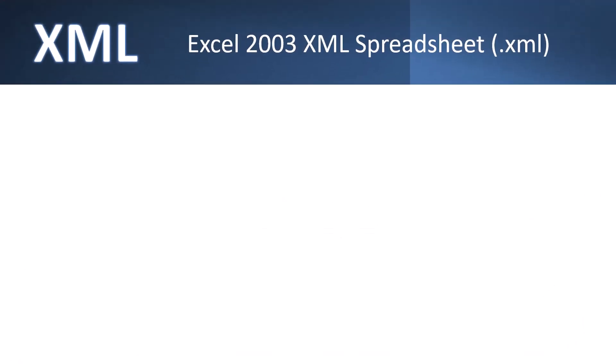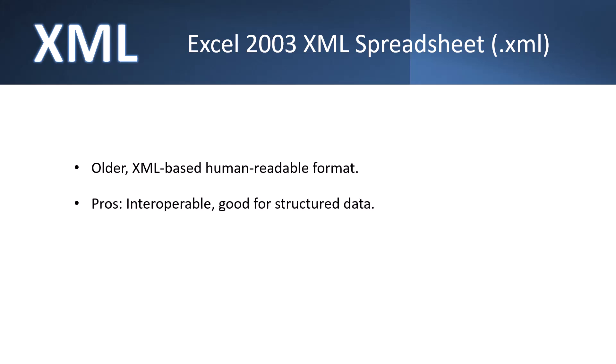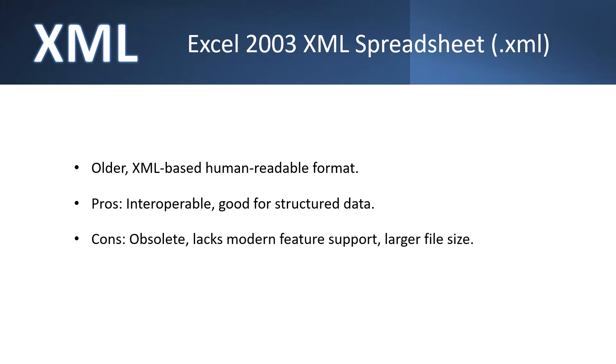The XML format — Extensible Markup Language — represents the older XML-based human-readable formats. The pros: they are interoperable and good for structured data. The cons: it's an obsolete format that lacks many modern features, and these XML files will likely result in larger file sizes. They're best used for legacy XML output and data integration.